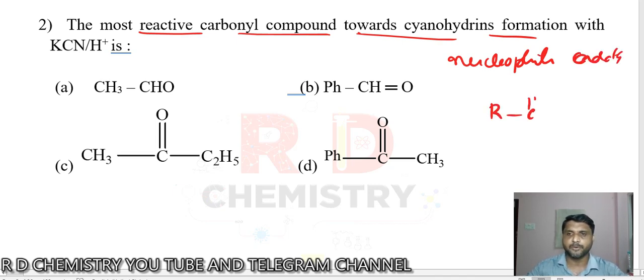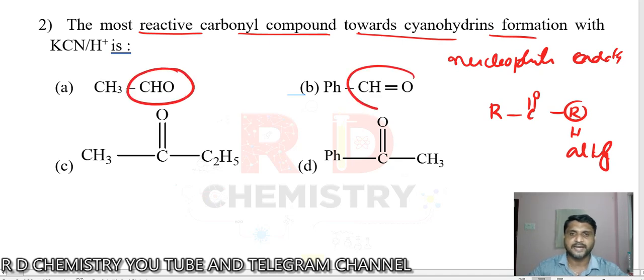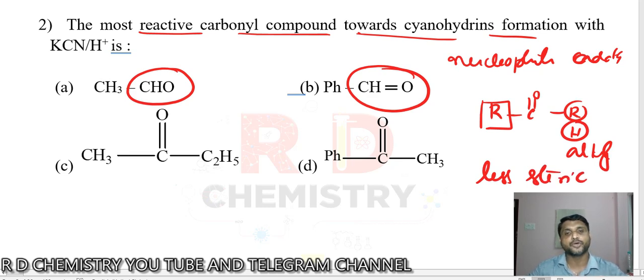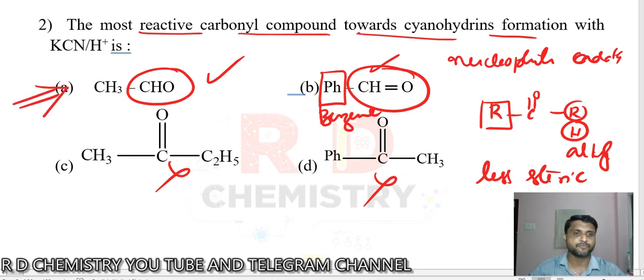Question number two: The most reactive carbonyl compound that reacts towards cyanohydrin formation. This is a nucleophilic addition reaction. Whenever there are aldehydes, they are highly reactive because on both sides one is R and the other is hydrogen. There is less steric hindrance. Ketones have more steric hindrance, so they are less reactive. Among the two alkyls, benzene is the bulkier group, so reactivity decreases. Highly reactive is the first one, so A is the answer.